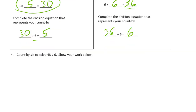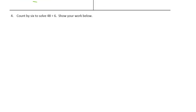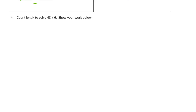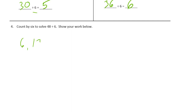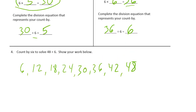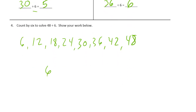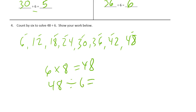Now we're counting by six to solve forty-eight divided by six, showing our work below. We've done this twice already with smaller numbers. Start the count: six, twelve, eighteen, twenty-four, thirty, thirty-six, forty-two, forty-eight. That's eight sixes — one, two, three, four, five, six, seven, eight. So six times eight equals forty-eight, which means forty-eight divided by six equals eight.